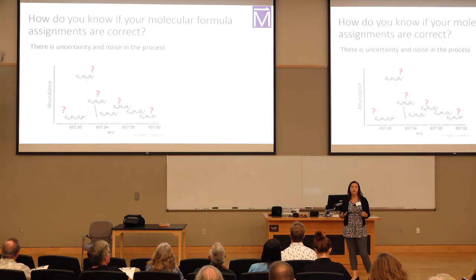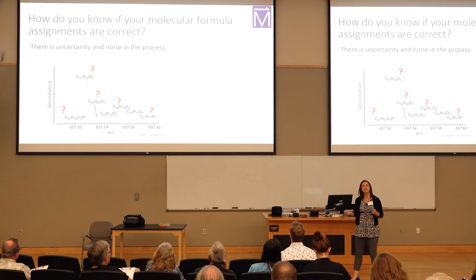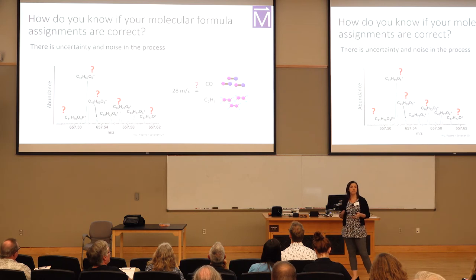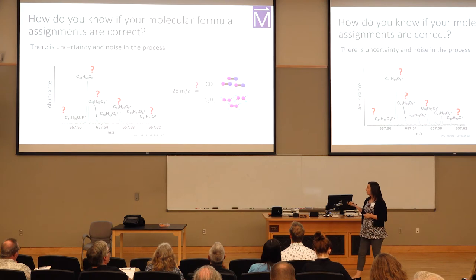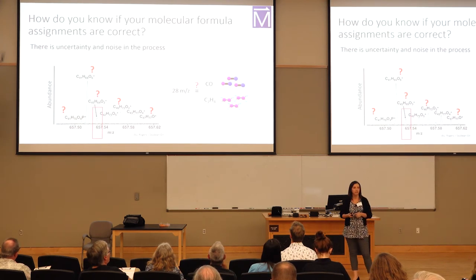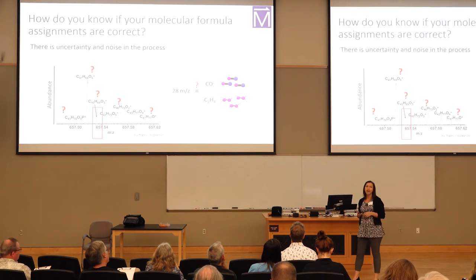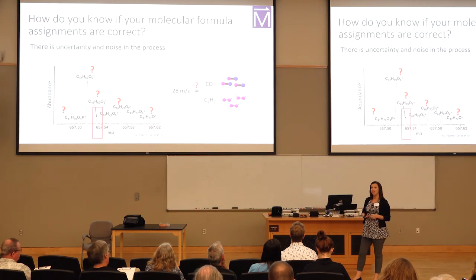But how do you know if your molecular formula assignments are correct? Since there are chemical components with similar M over Z, which one is in your sample? Also, there are small peaks in the spectrum — is this component really there? How confident are you in your chemical composition guess?